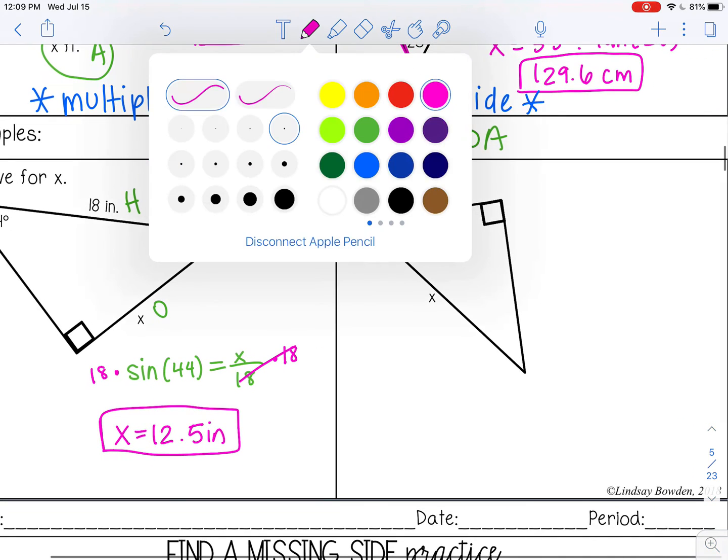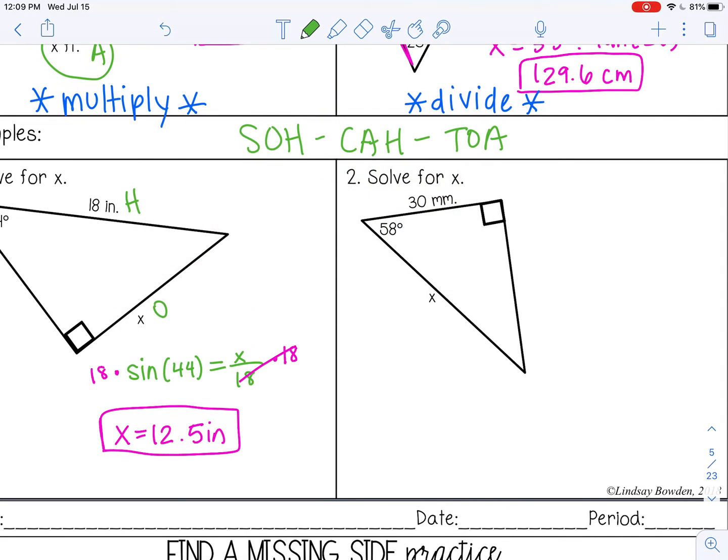And then in the last example: x is my hypotenuse. The side with value 30 is right next to the angle, so that would be adjacent. So this one would be cosine.